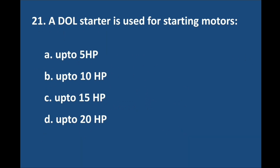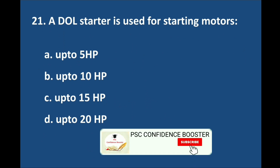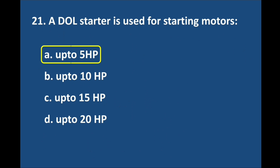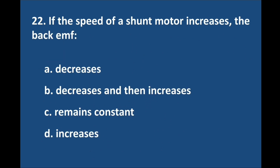Question number 21. A DOL starter is used for starting motors — answer is option A: Up to 5 HP. Question number 22. If the speed of a shunt motor increases, the back EMF — answer is option D: Increases.